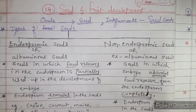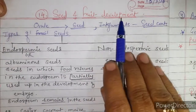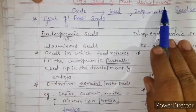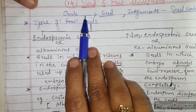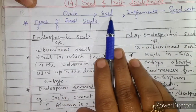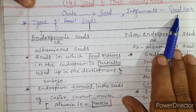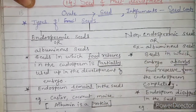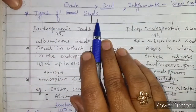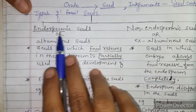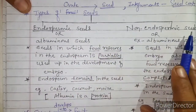Welcome students. In this period we are going to study about seed and fruit development. In the last period I told you that ovules are transformed into seeds and integuments are transformed into seed coats. Now, there are two types of seeds: endospermic seeds and non-endospermic seeds.